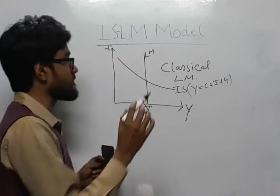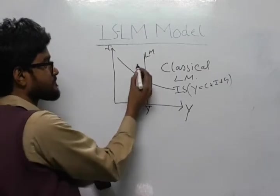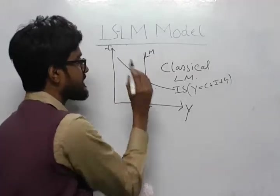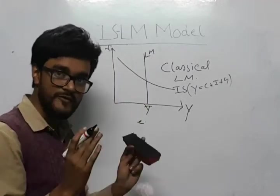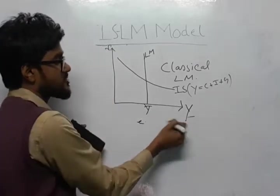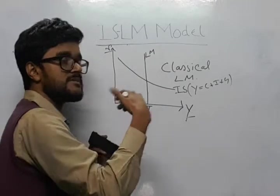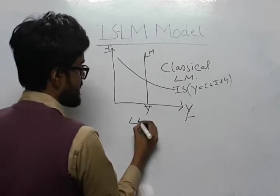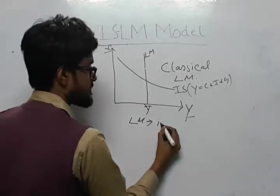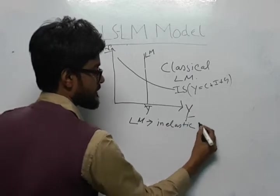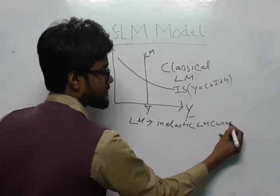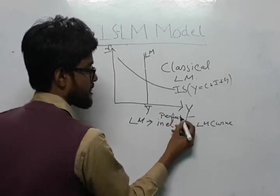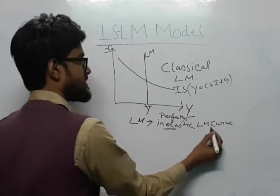It means that the LM curve is ineffective. That is, the elasticity of LM curve is perfectly inelastic. There is no relationship between Y and R. Even if you increase the money supply, the LM curve will remain at this level. So, this is called the LM curve to be an inelastic LM curve or to be more accurate, we will call it perfectly inelastic LM curve.